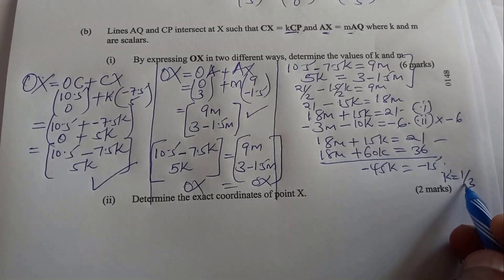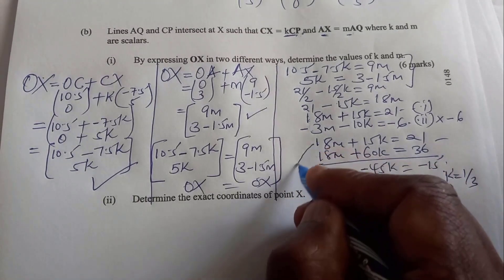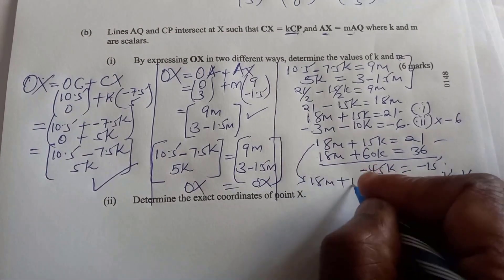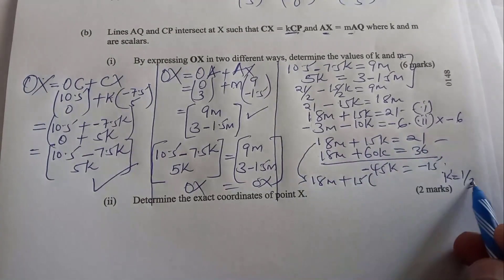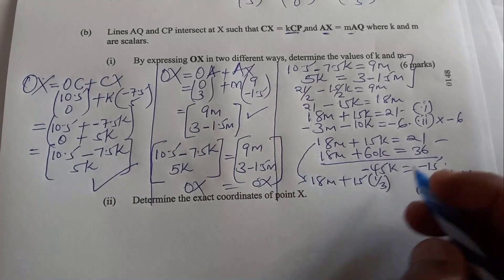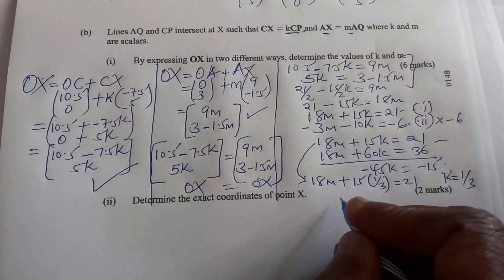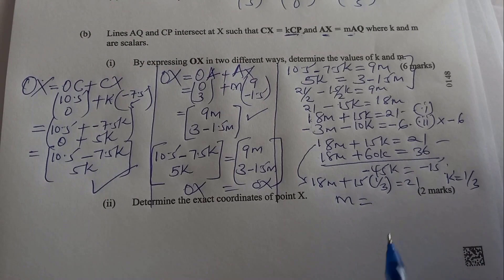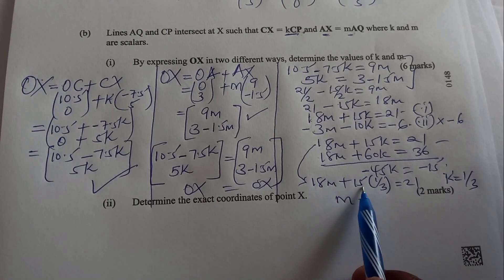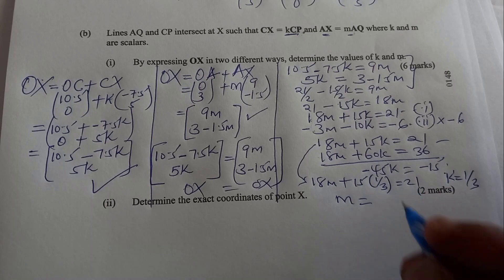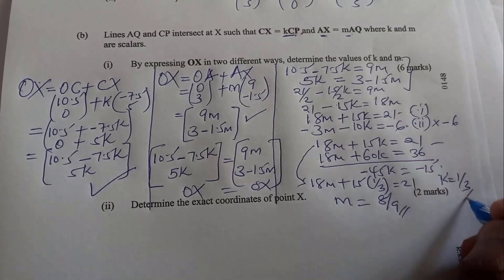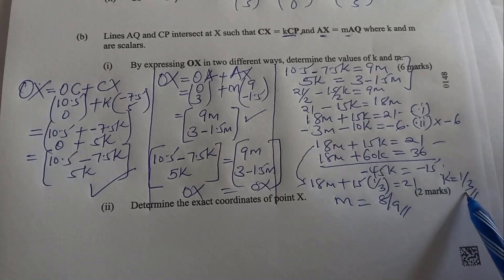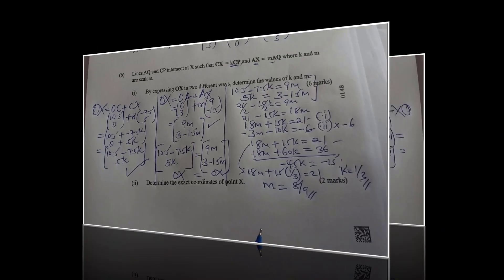So k = −15 ÷ −45 = 1/3. Then substituting k = 1/3 into 18m + 15k = 21 gives 18m + 15·(1/3) = 21, and solving that gives m = 8/9. So now you have identified the values: k = 1/3 and m = 8/9.